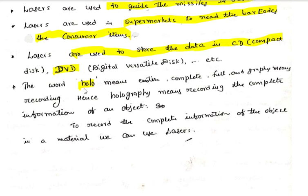The word holography comes from two parts: 'holo' means entire, complete, or full; and 'graphy' means recording. You can see hologram stickers on items such as textbooks, shown in silver color. So, holography means recording the complete information of an object.